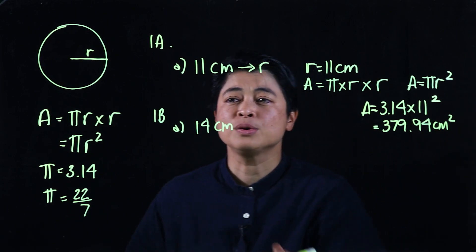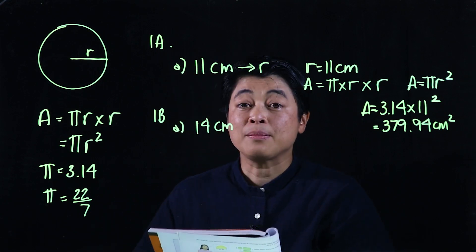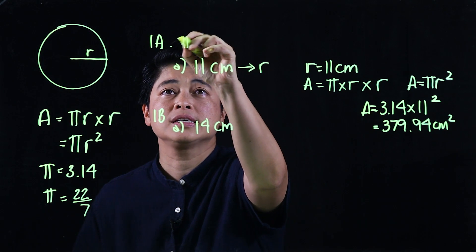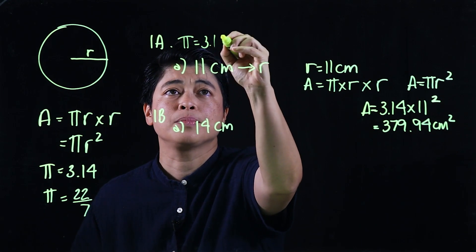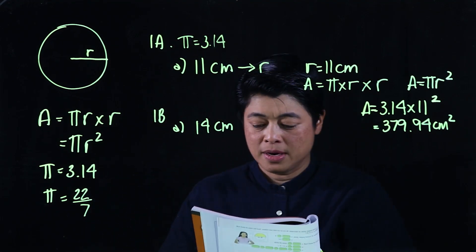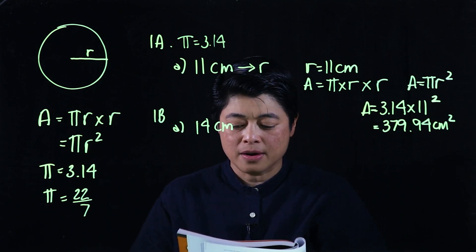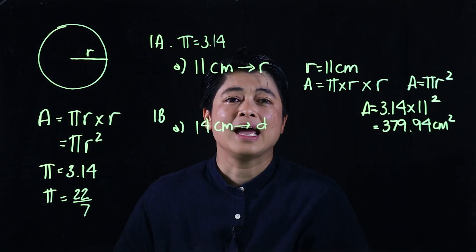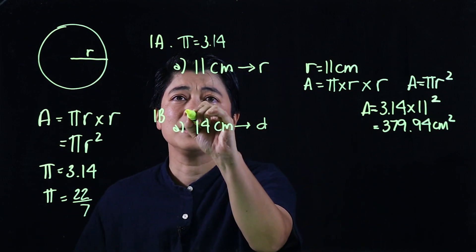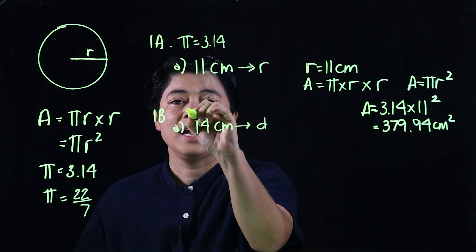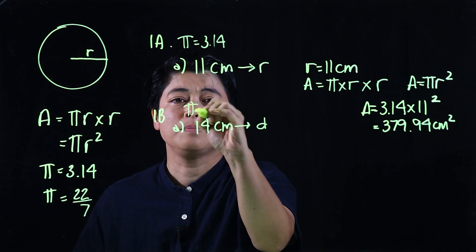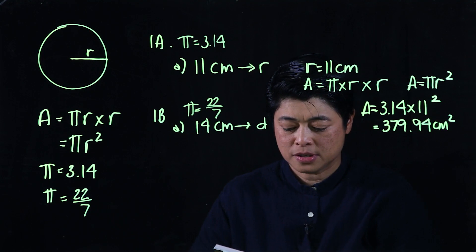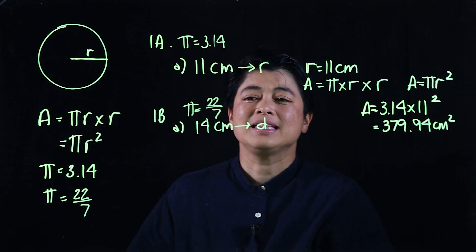Moving to 1b, this time around it doesn't want us to use the calculator. In 1b it says find the area with the given diameter, and this time they give the diameter. So which means if the diameter is given and they say use pi to be 22 over 7...